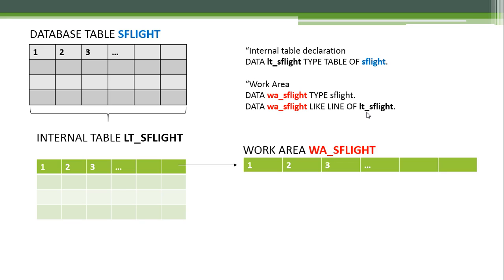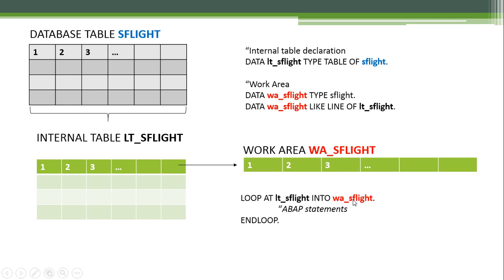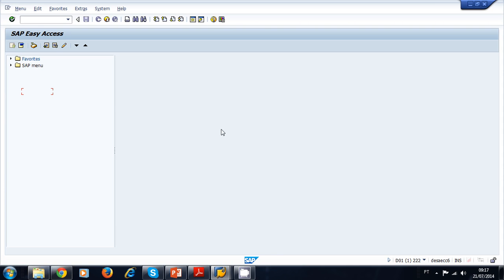The internal table is a structure you can work with one record at a time using the LOOP AT statement. You loop at your internal table into your working area and process each record line by line as needed. Now let's practice inside the system, declaring an internal table and using it in a program.